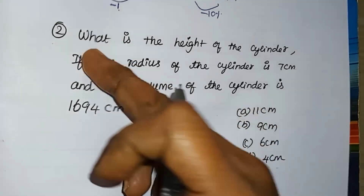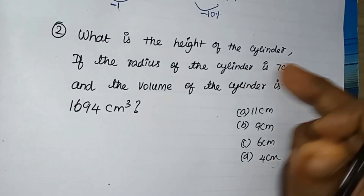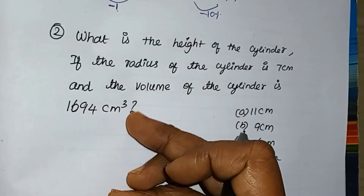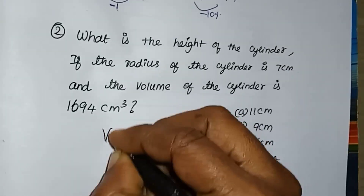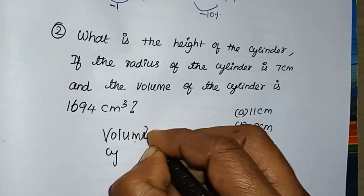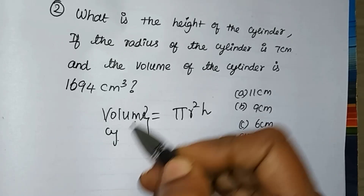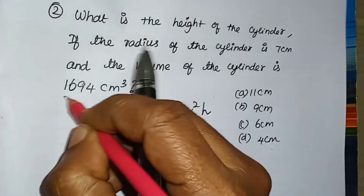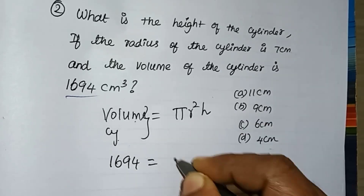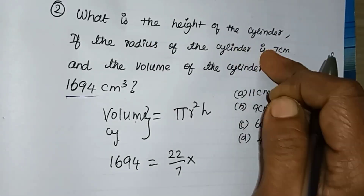Mensuration is an important question. What is the height of the cylinder if the radius of the cylinder is 7 cm and the volume of the cylinder is 5994 cm³? The volume of a cylinder is π r² h. We have the volume value of 5994. Pi is 22/7, and we have the radius of 7 cm.